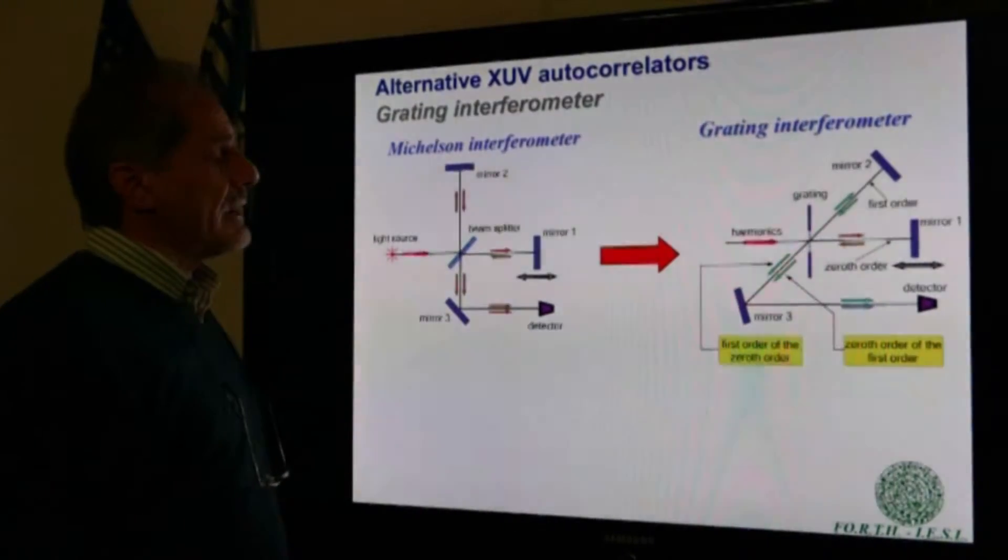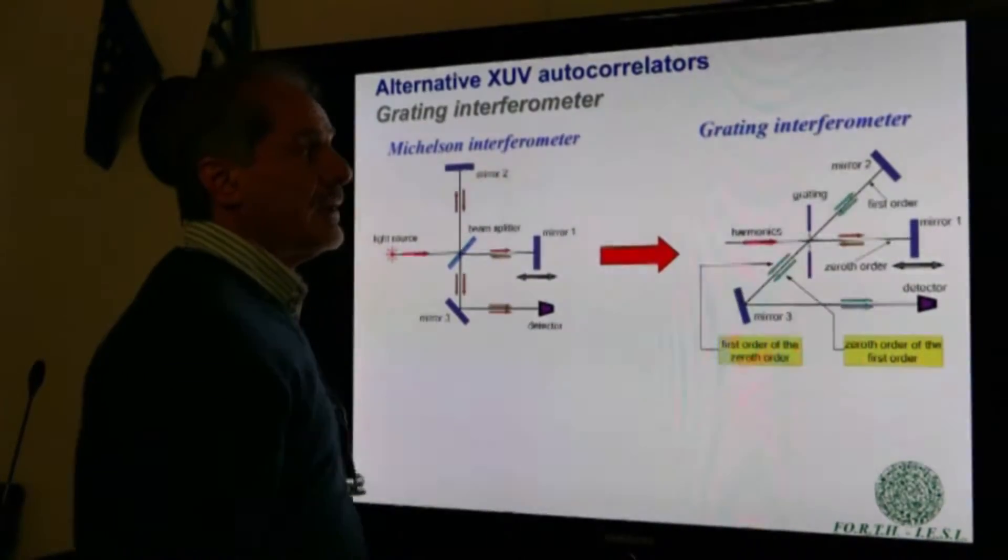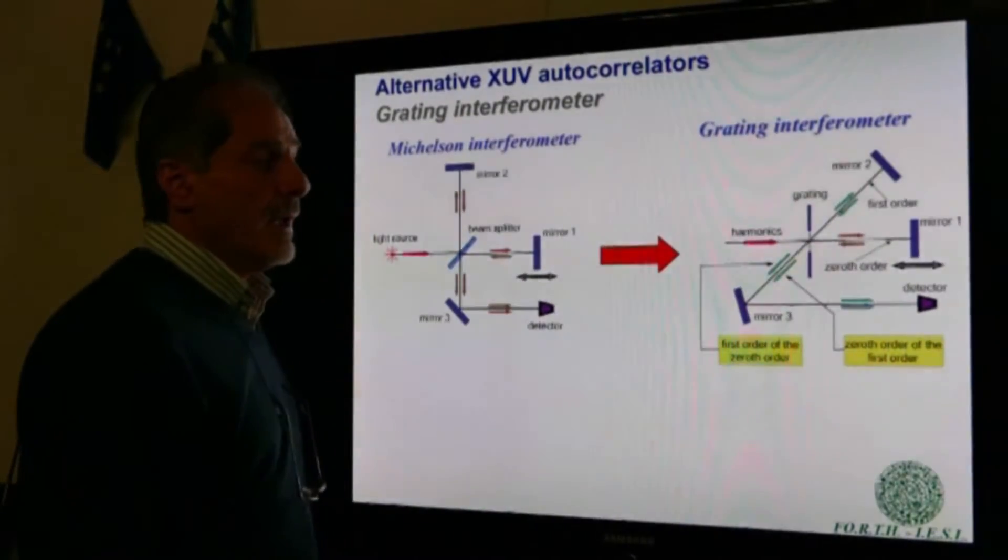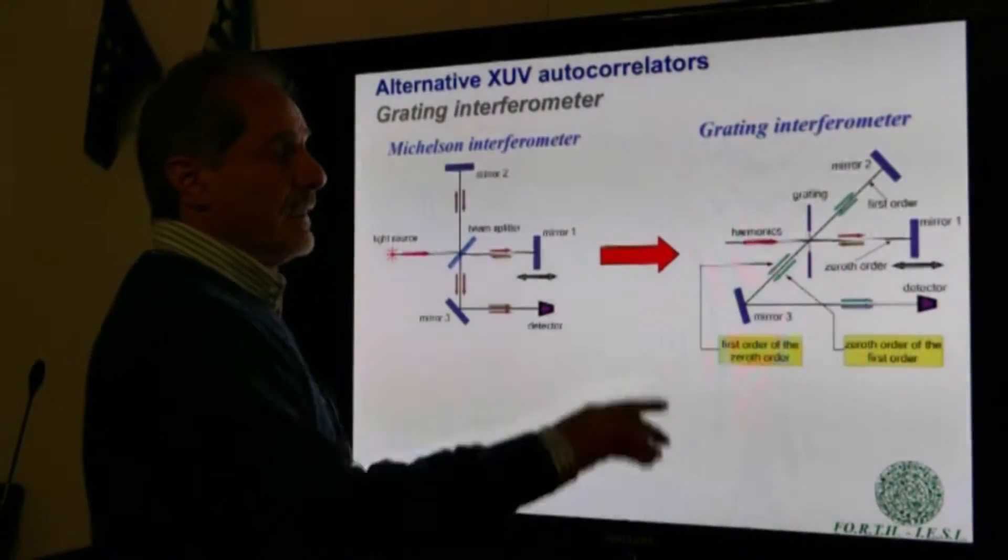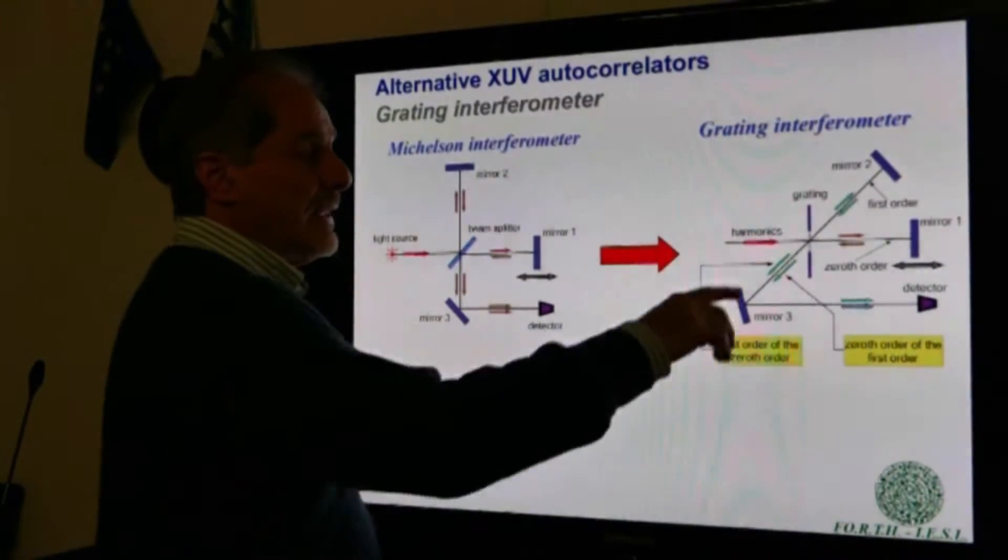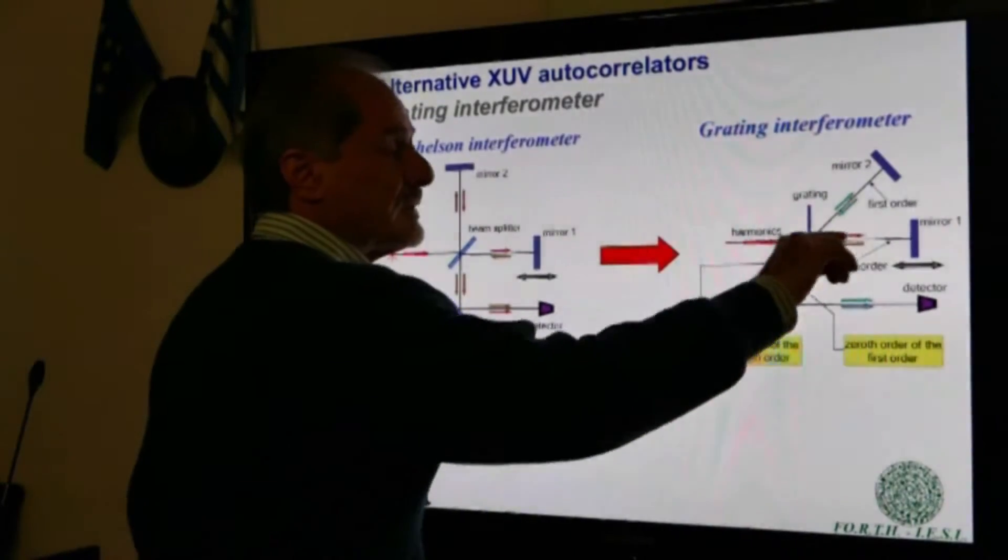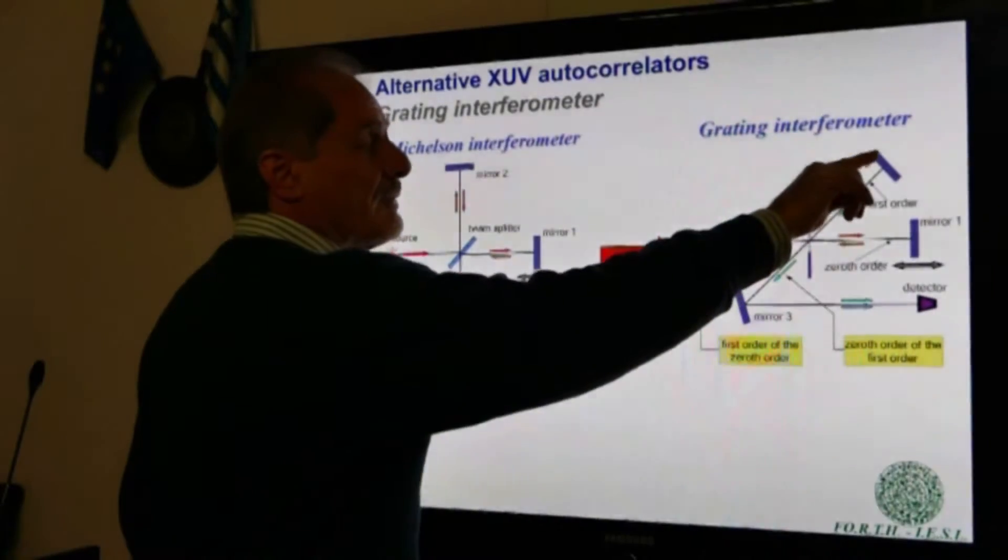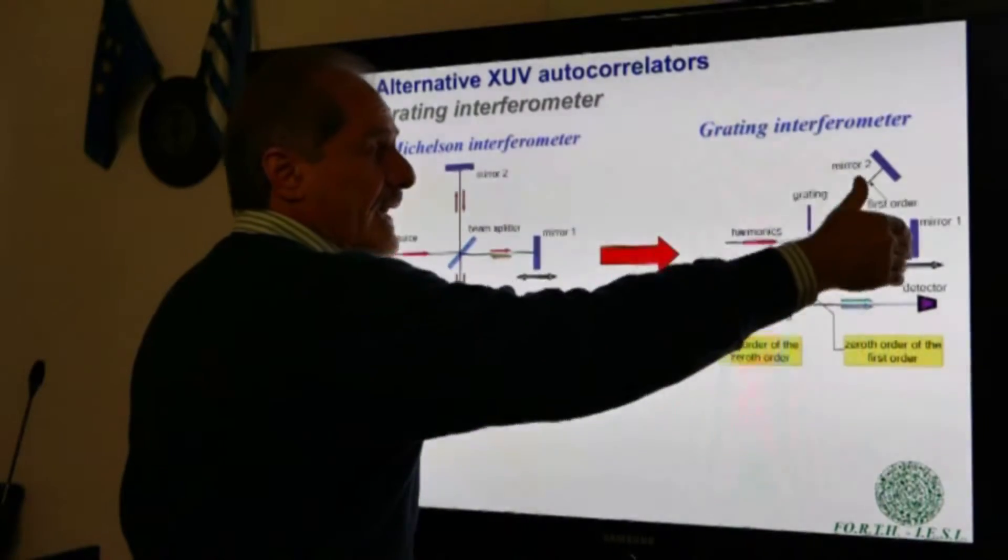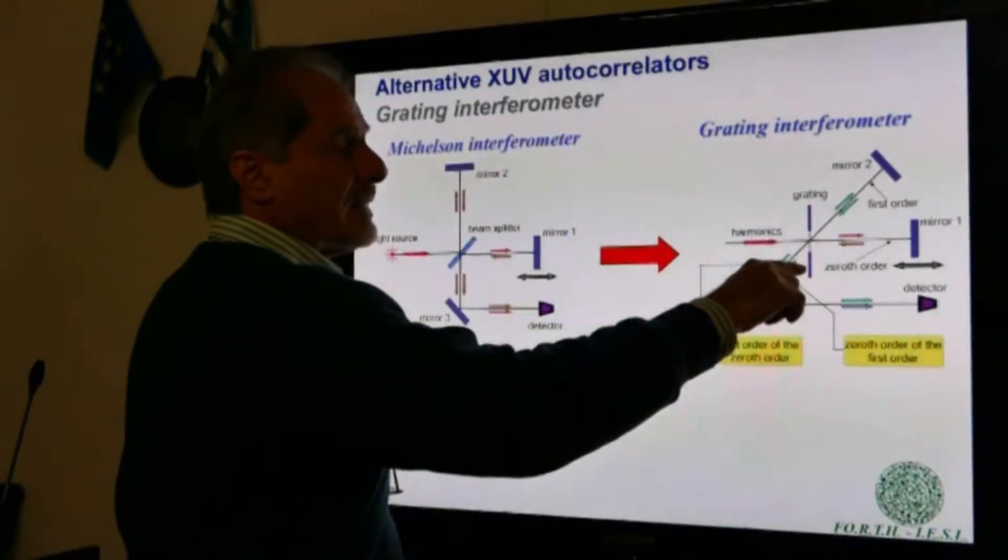Here is a Michelson interferometer, a conventional one, and here is the analog using a grating interferometer. In this case, we are using a transmission grating. Harmonics are impinging perpendicularly and then we have the different diffraction orders. Here are shown the zero-order diffraction and the first-order diffraction. The beams are then reflected by two mirrors and are recombined at the grating.